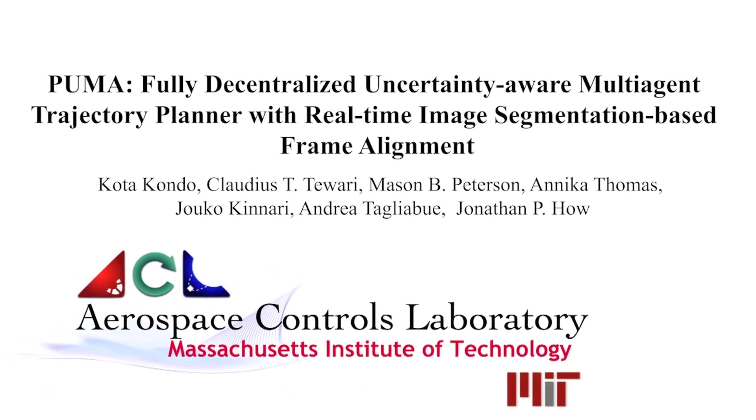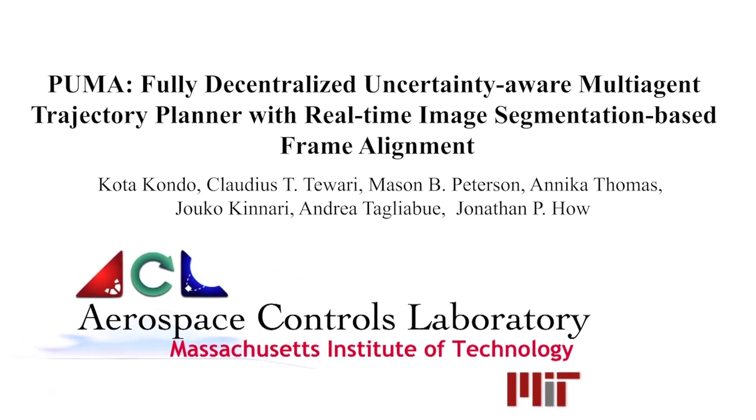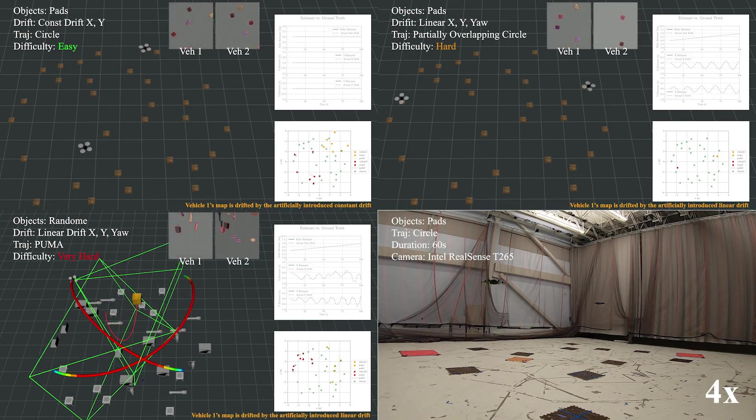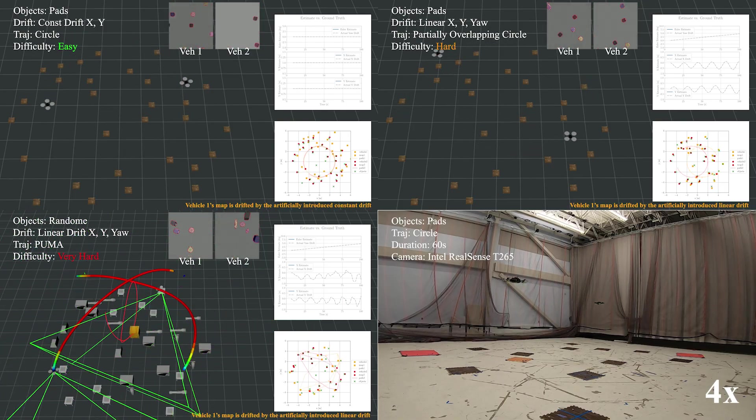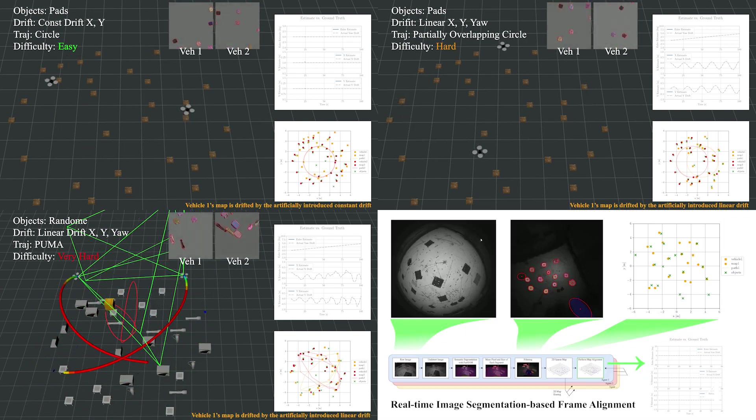My name is Koda Konder and we are presenting PUMA. PUMA is a fully decentralized uncertainty-aware multi-agent trajectory planner and we implemented real-time image segmentation-based frame alignment.